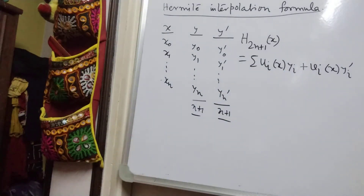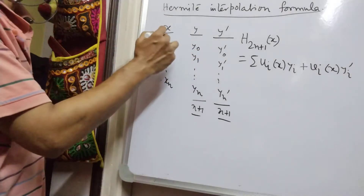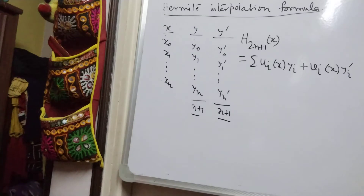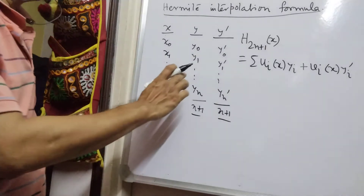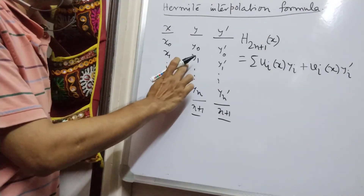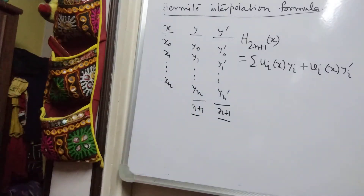Hermite interpolation formula gives us flexibility and accuracy in determining the polynomial y in terms of its argument x, since we have values of the function as well as values of the derivative of the function.